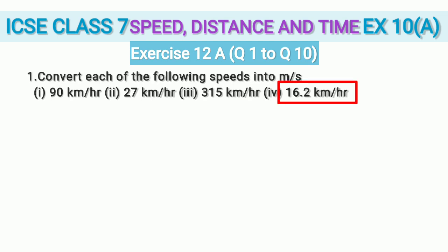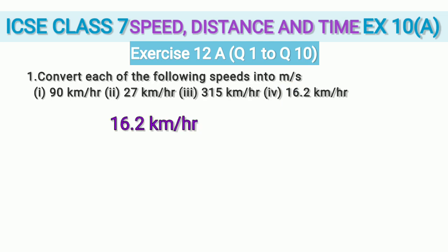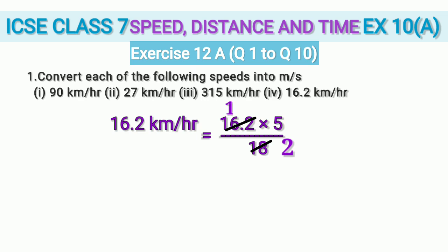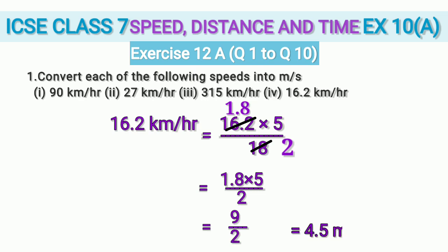In sub-question 4, we convert 16.2 km/h to m/s by multiplying by 5/18. Using the 9 times table for 18 gives 2. For 16.2: 9 ones are 9 but 16 is 7 more, so 2 becomes 72, and 8 nines are 72 — so 16.2 ÷ 9 = 1.8. We have 1.8 × 5 ÷ 2 = 9 ÷ 2 = 4.5. So 16.2 km/h is 4.5 m/s.